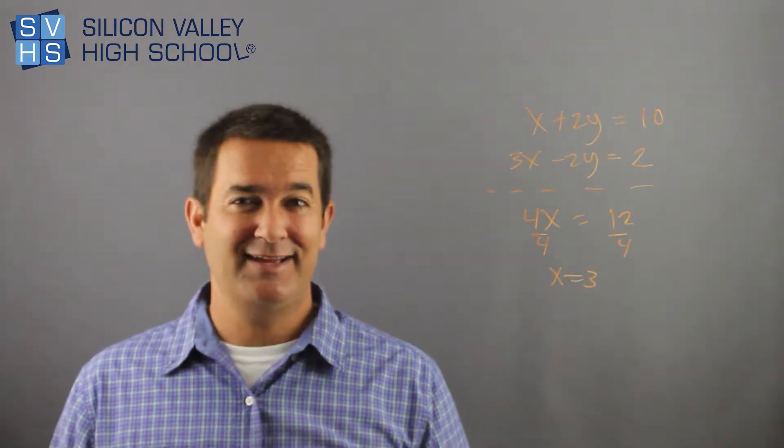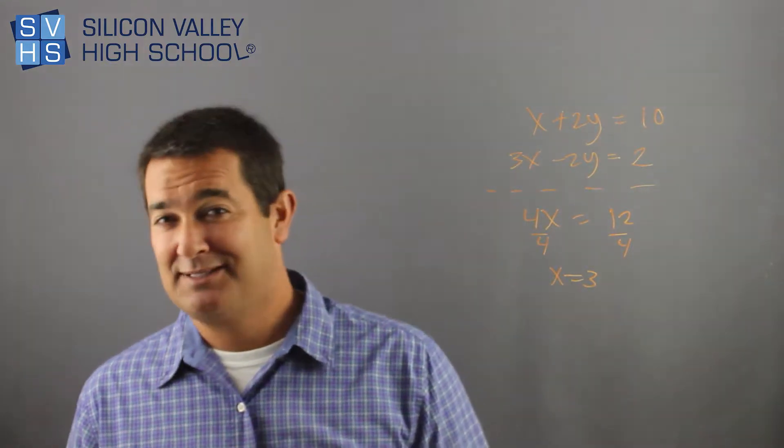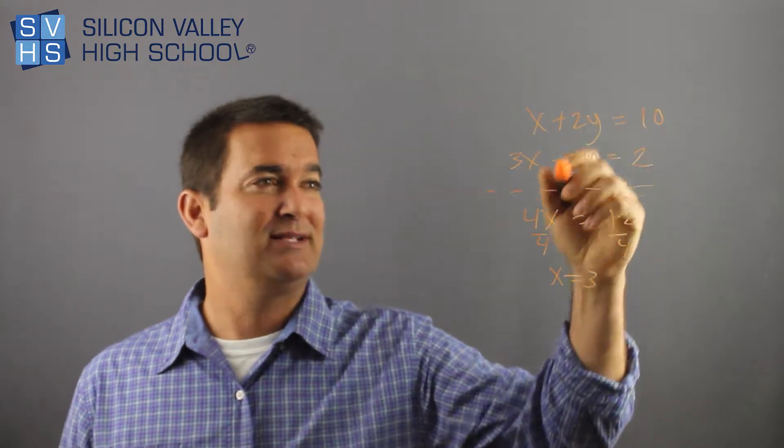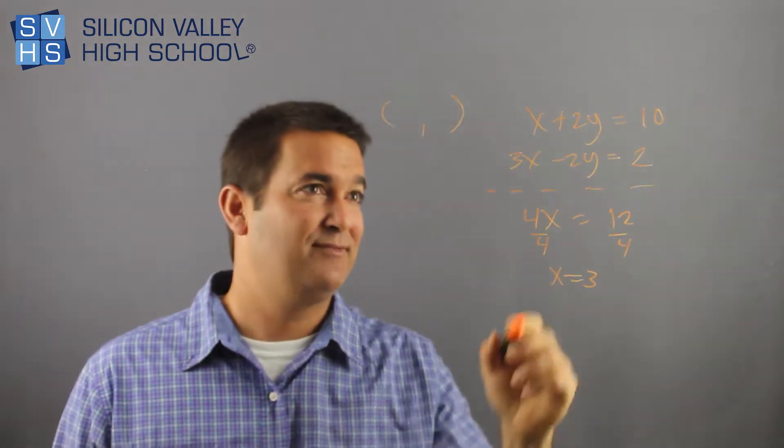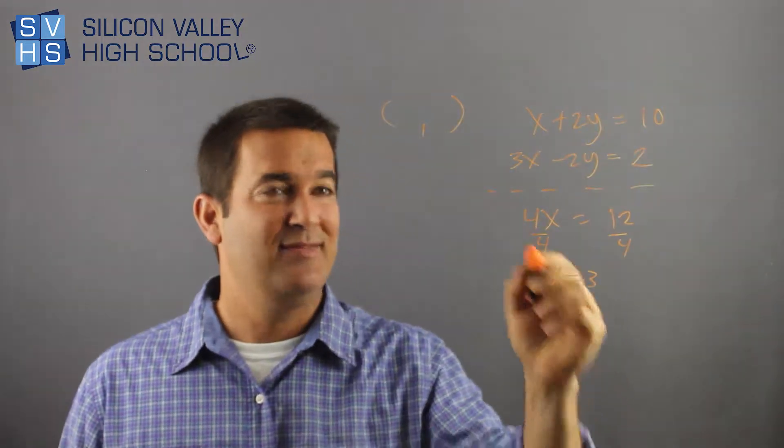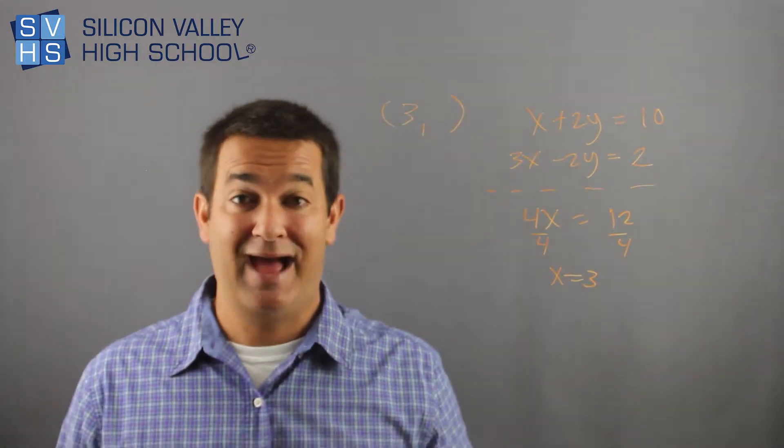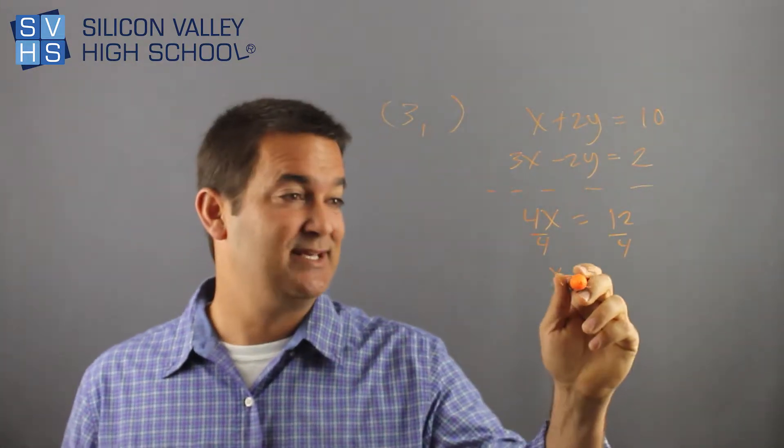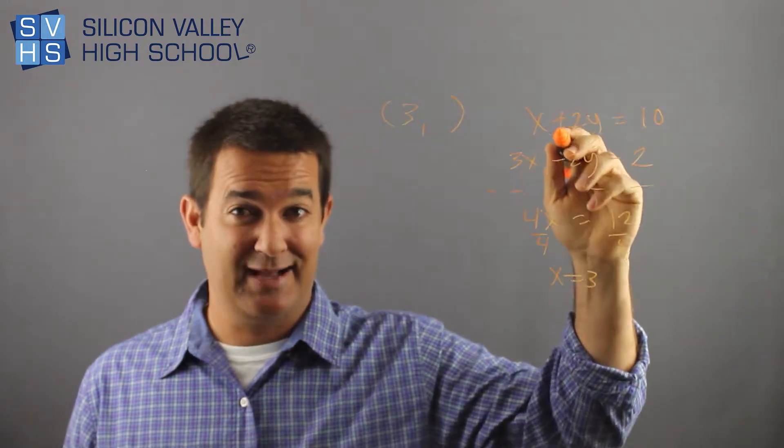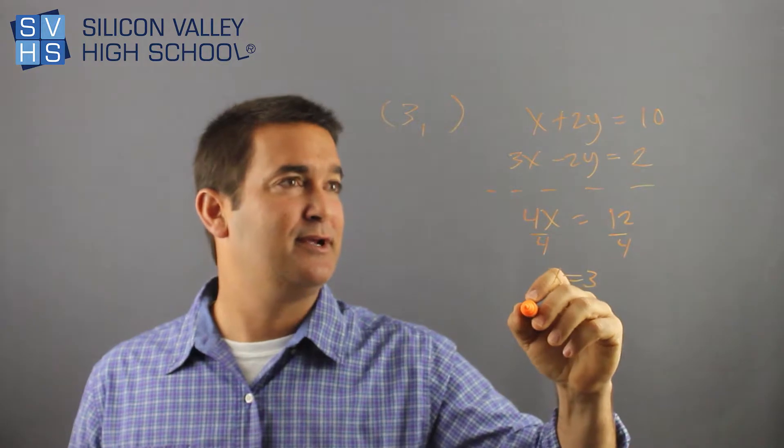The thing is, every addition method problem you do kind of becomes a substitution problem anyways, because so what? When I solve a system of equations, I'm expecting to get a point, an x and a y, right? I have to solve for an x and a y. And this only gave me my x. So the addition method was cool for like half the problem. The good news is, getting the other half the problem is easy. You just plug 3 in for either x and then solve for y. So this one kind of looks easy. I'll put my 3 in here.